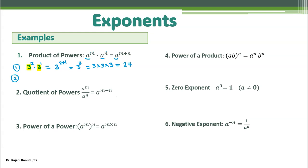Let's take another example: x power 5 times x power 7. The variable can be anything — not just a or b. It's understood there is a multiplication sign between them. Since the base x is the same, we write x and add the powers: 5 plus 7. So this gives x to the power 12. Since x is a variable, you cannot simplify further.